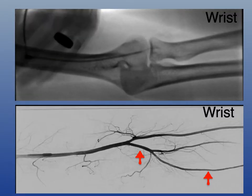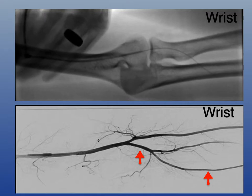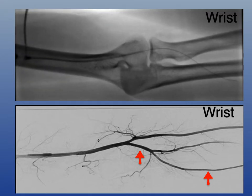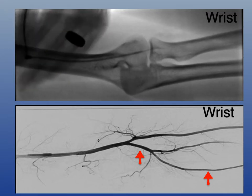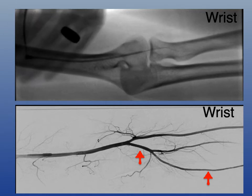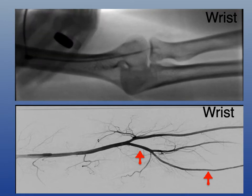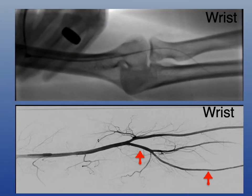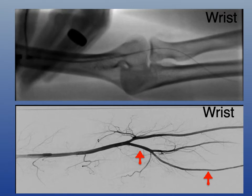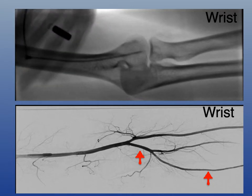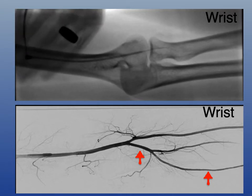Here is an endo AVF creation that I performed. I obtained antegrade access in the brachial artery with a 4-French sheath in place. I then used a guide wire to gain access into the common ulnar artery and ultimately the proper ulnar artery. The arteriogram below shows the working anatomy.